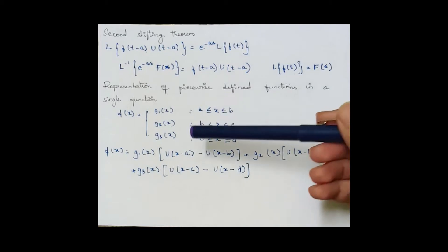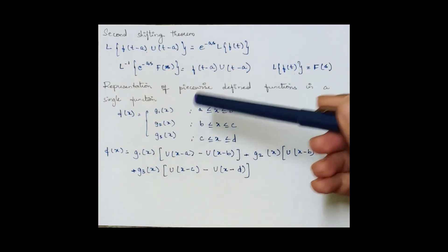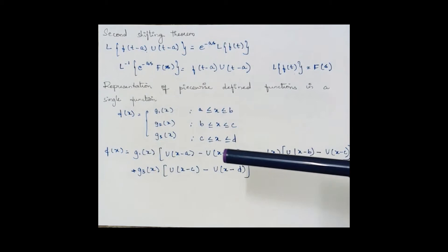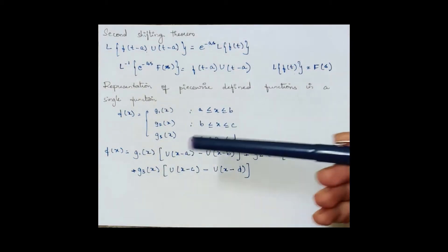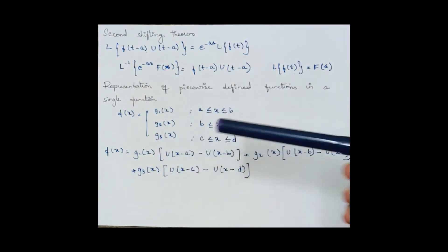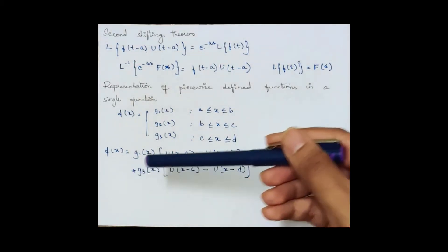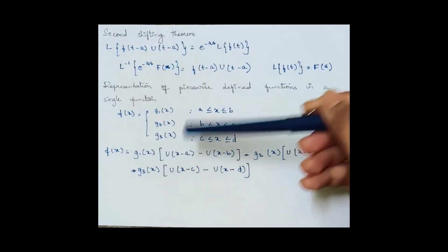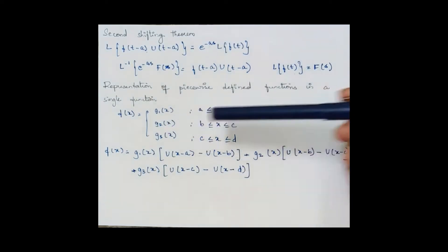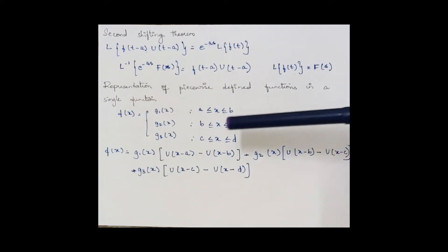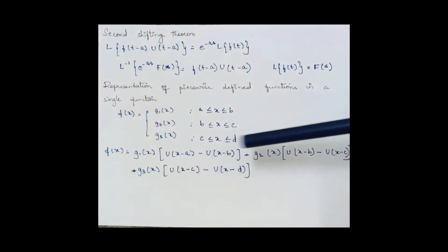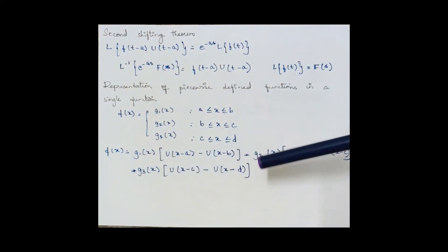The representation of piecewise defined functions as a single function works as follows. If you have g₁(x) for a ≤ x < b, g₂(x) for b ≤ x < c, and g₃(x) for c ≤ x < d, then the single function f(x) equals g₁(x)[u(x−a) − u(x−b)] + g₂(x)[u(x−b) − u(x−c)] + g₃(x)[u(x−c) − u(x−d)].